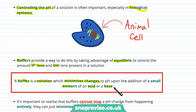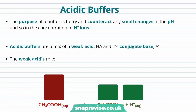It's important to realise that buffers cannot stop a pH change from happening entirely. The key part of this definition is that they minimise the changes, and also they only work when it's a small amount of acid or base — they can be overloaded with too much. The purpose of buffers is to counteract small changes in the pH and so in the concentration of H+ ions.